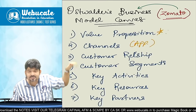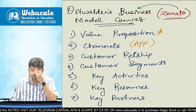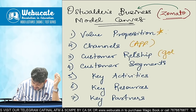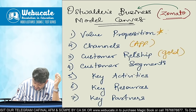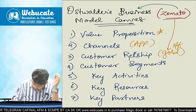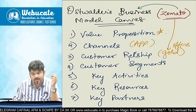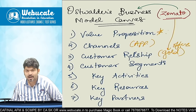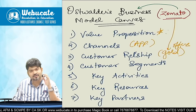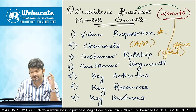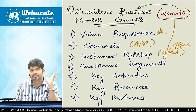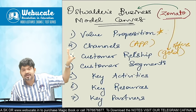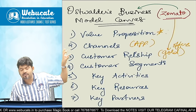Customer relationship. Abhi agar aap logon ko pata ho, toh Zomato Gold aata hai, Zomato ke itne saare offers aate hain — all of that is a way to build a customer relationship. Agar aaj mera birthday hai, meri anniversary hai, toh Zomato will send me a message: 'Sir, today is your birthday, we are giving you 30% discount.' It is a way of Zomato building customer relationship.